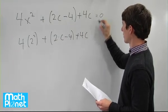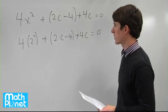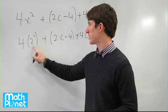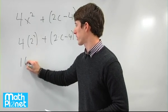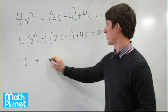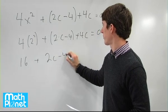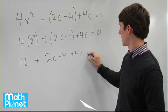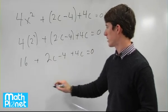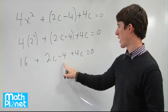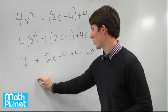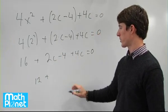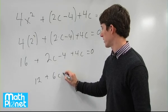We know that it's equal to 0, so we can make an equation. 4 times 4 is 16, so 4x squared becomes 16. We can write this out: 16 plus 2c minus 4 plus 4c equals 0. Now we can simplify — 16 minus 4 is 12, and we have 2c plus 4c, which is 6c.